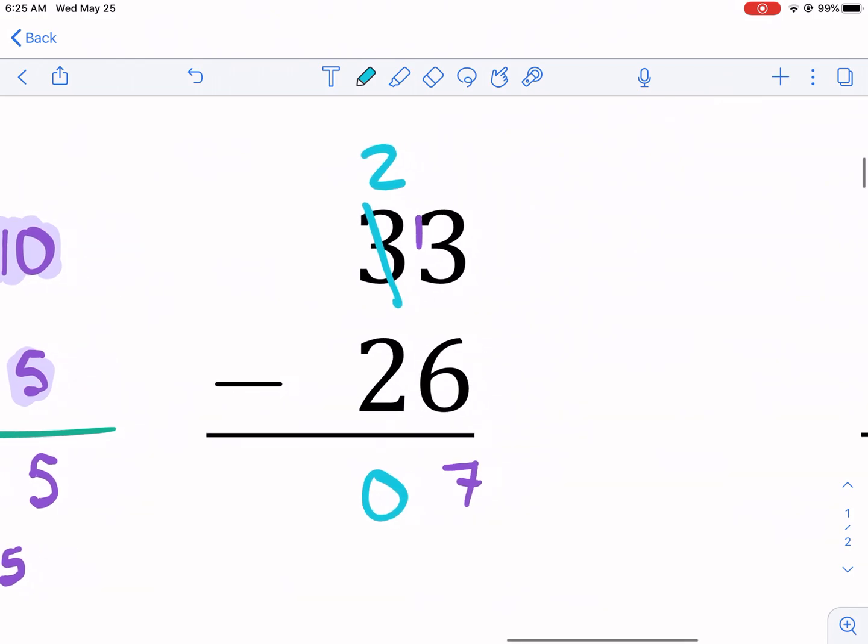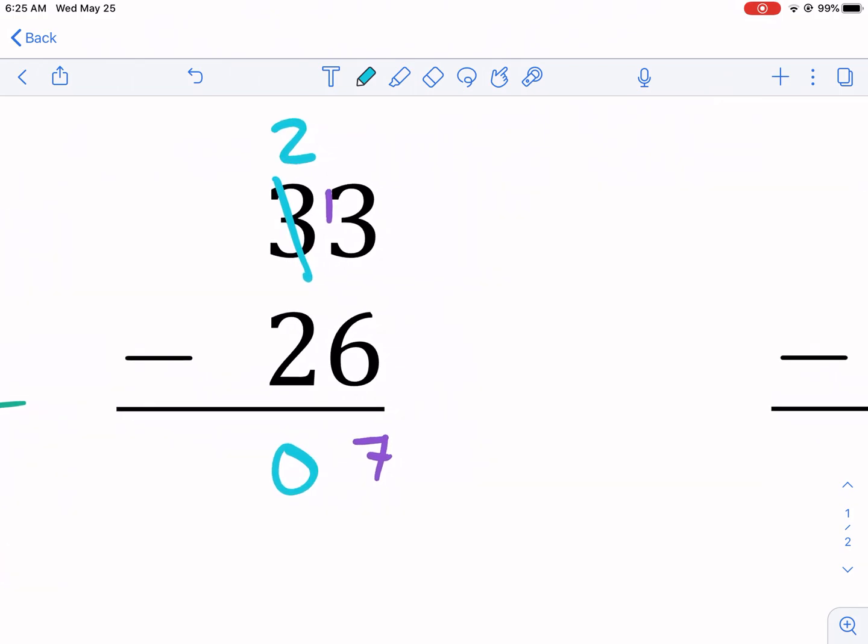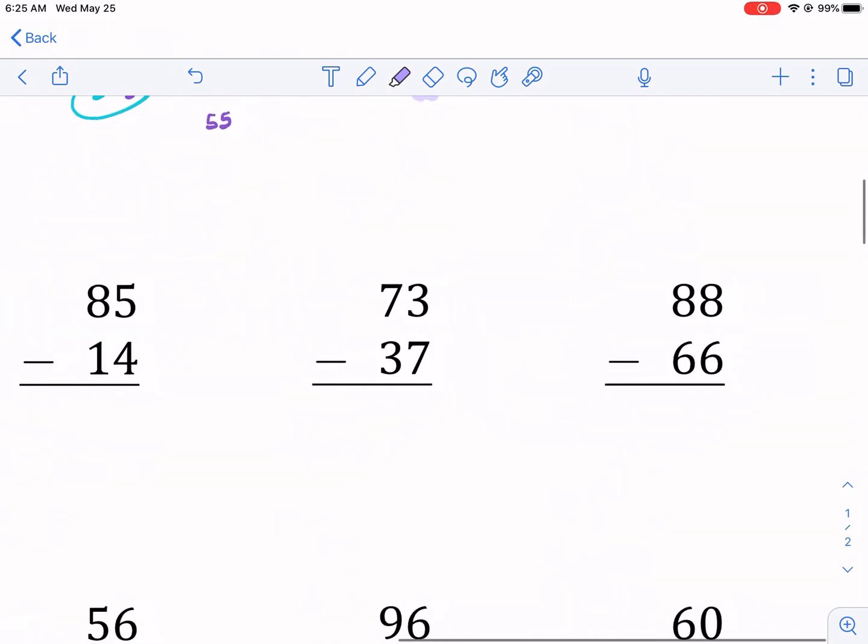So if I did 26 plus 7, I would get 33. 33 minus 26, I get 7. You don't need that 0 there, obviously. And 7 is going to be your answer. Let's jump around. Let's do a couple more.